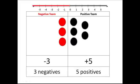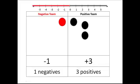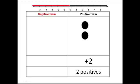As we remove the zero pairs, we come up with equivalent expressions. And in the end, we end up with positive two. The positives win by two.